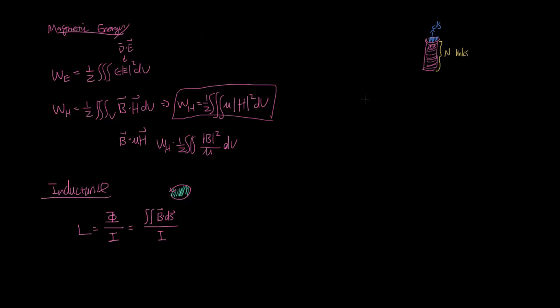you can calculate the inductance as being n times phi divided by the total amount of current. And one quantity that is worth noting is that this n phi is often referred to as the flux linkage.